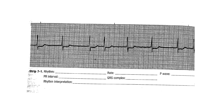Looking at this one, the rhythm is considered irregular - the R to R is irregular. For the rate, we use the six-second strip, counting the number of R waves between your six seconds. You have six, multiply that by ten, so you have a heart rate of 60. For P waves, you do not see any P waves - they are fibrillatory waveforms along the isoelectric line, so we cannot do a PR interval.